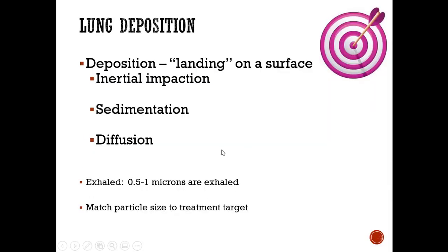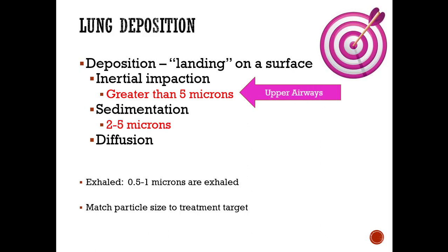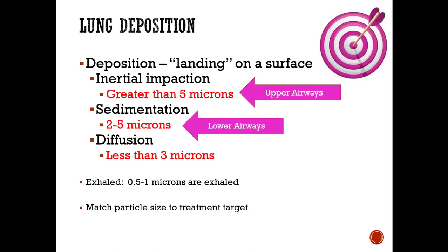Particles of 0.5 to 1 micron are simply exhaled back out because they're so small. You also want to match your particle size to your treatment target. Different medications and delivery devices target different micron sizes—if you want the lower airways, target two to five microns; if you want the upper airways, like with lidocaine, you want greater than five microns. You design your drug and delivery device to get what you're looking for.